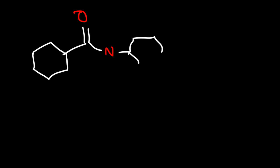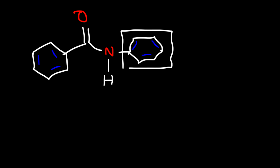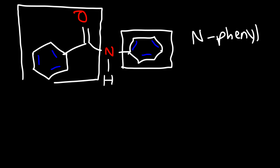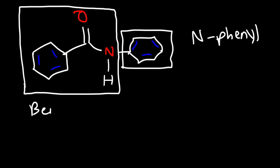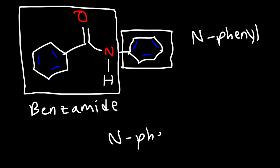In the next example we're going to have two benzene rings. We have one benzene ring attached to the nitrogen atom and another benzene ring attached to the carbonyl group. The benzene ring attached to the nitrogen is called N-phenyl. The benzene ring attached to the carbonyl — including the amide — is benzamide. Putting this together gives us N-phenylbenzamide.